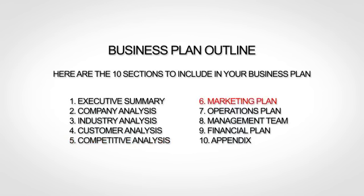The sixth section is your marketing plan, where you lay out your marketing strategy. The seventh section is your operations plan, where you explain how you actually run or will run your business. The next section, the management team, is where you provide bios of your team. The ninth section is your financial plan, where you give financial forecasts. And finally, the tenth and last section is your appendix, where you provide any additional supporting information.